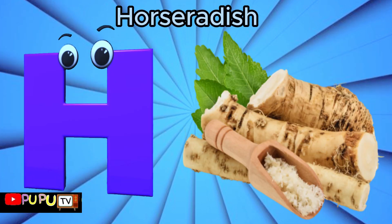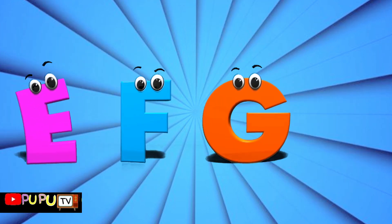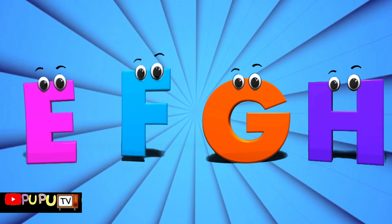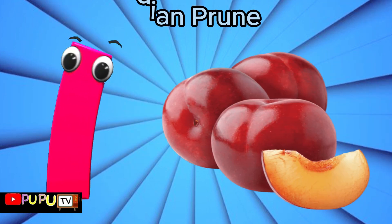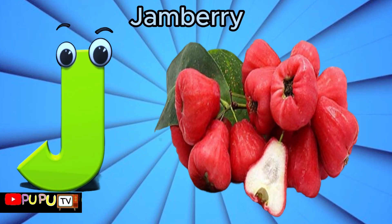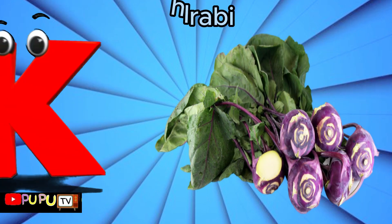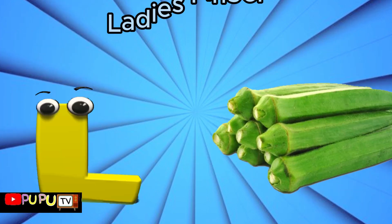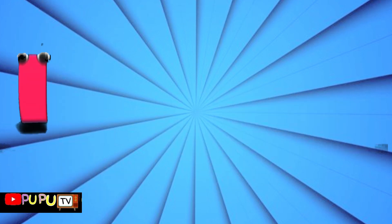H is for horseradish. I is for Indian prune. J is for jamberry. K is for kohlrabi. L is for lady's finger.